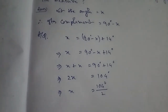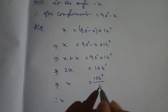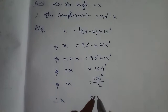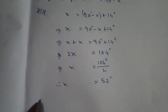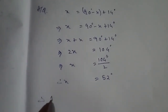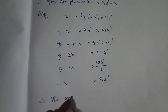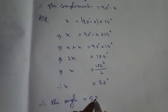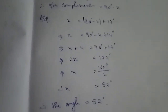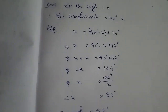Dividing 104 by 2 gives 52 degrees. Therefore, the angle is equal to 52 degrees. This one is complete. We have done many problems about complementary angles, now supplementary.